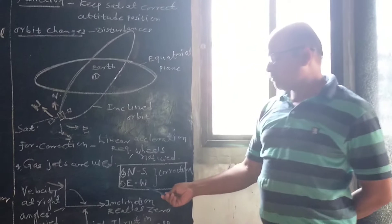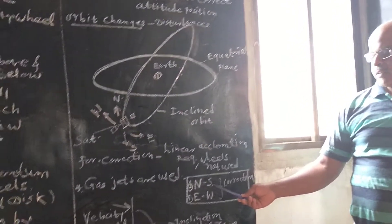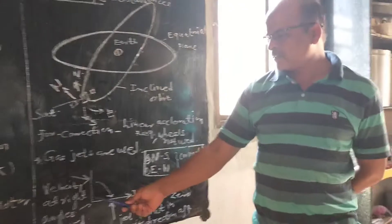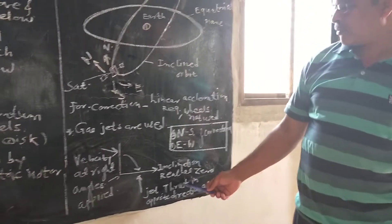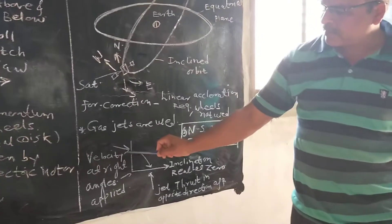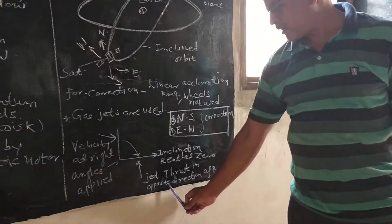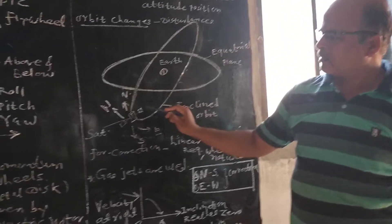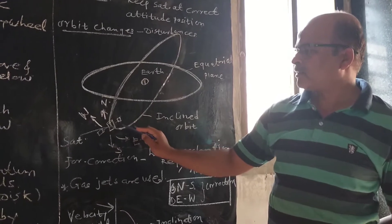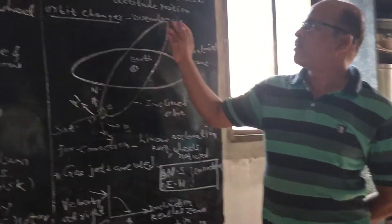As shown in this figure, how satellite is kept in a proper orbit. When velocity at right angles is applied, then inclination reaches to zero. When velocity at right angles is applied, that is, gas jets is applied along this side, and when this angle becomes zero, another jet thrust is applied along this direction. And satellite orbit is controlled.